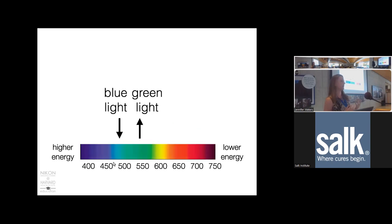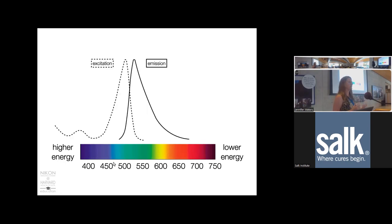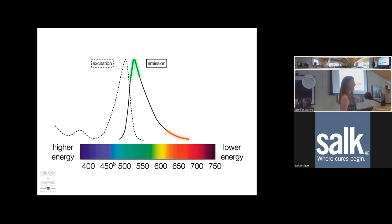We often say a fluorophore like GFP absorbs blue light and emits green light, but in reality fluorophores are capable of being excited by a range of wavelengths and can emit a range of wavelengths. In the case of GFP, it's most likely to emit green, but it may also emit at other wavelengths. These curves are called the excitation and emission spectra of the fluorophore—think of them like a probability curve. This molecule is most likely to be excited by 488 nm light, but also has some chance of being excited by ultraviolet light.